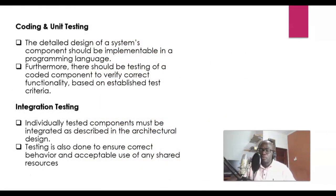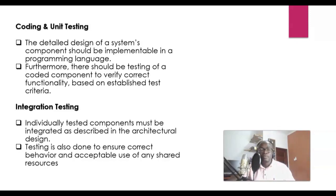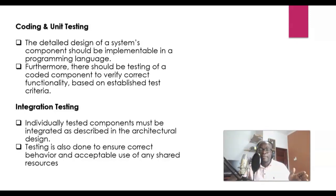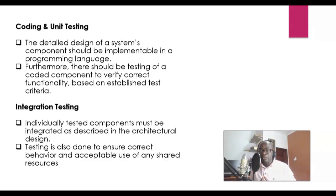We continue from where we ended in the last presentation, where we looked at the different activities involved in the traditional systems development lifecycle, commonly known as the waterfall model. We started with the elicitation of requirements and moved through design — beginning with architectural design and then detailed design, where the focus is on the individual components that make up a system.